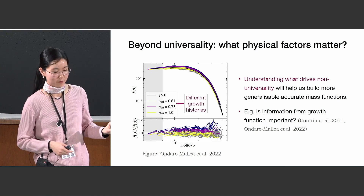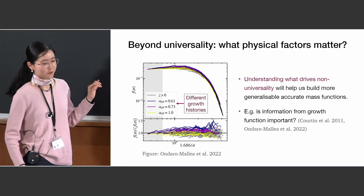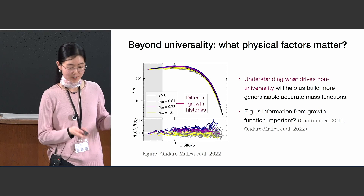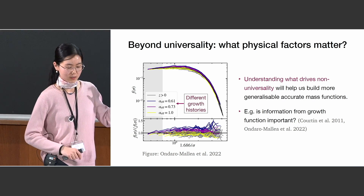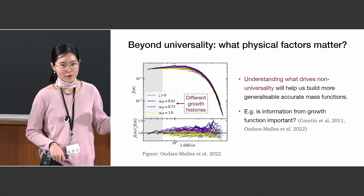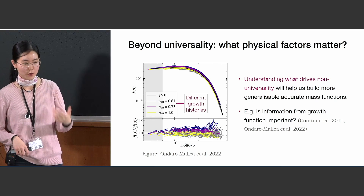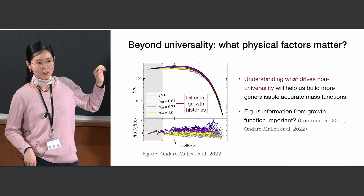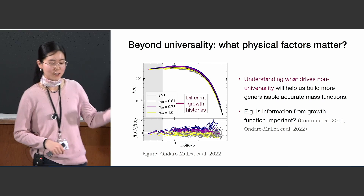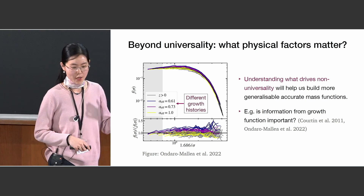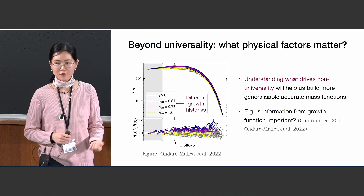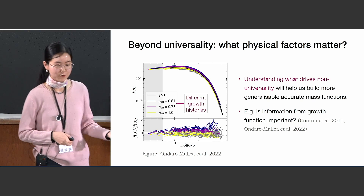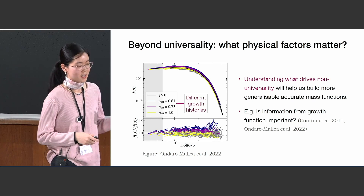A leading candidate from the literature is information from the growth function. The plot on the left shows f(sigma) for simulations run with the same power spectrum but different growth histories shown in different colors. The residuals plot on the bottom shows that the halo mass function is non-universal depending on the growth history. So we want to figure out what we need to model the halo mass function, and whether information from the growth function is indeed relevant.